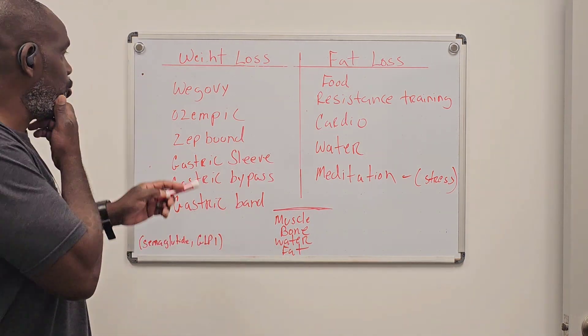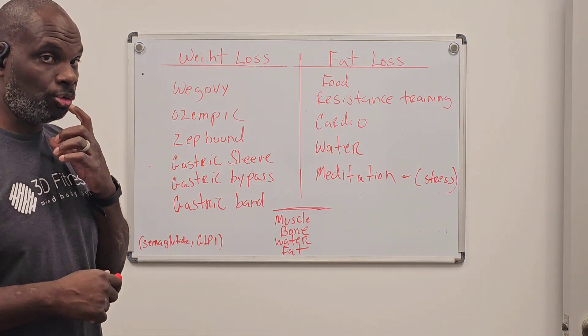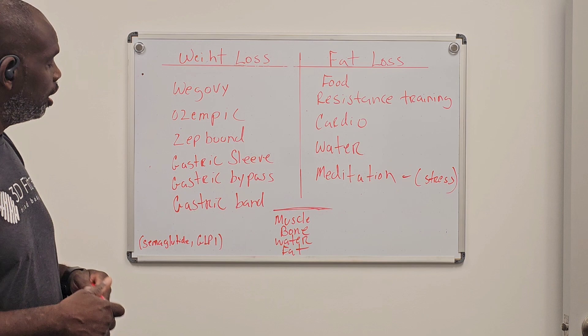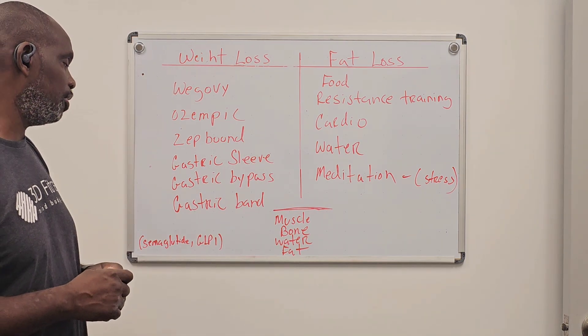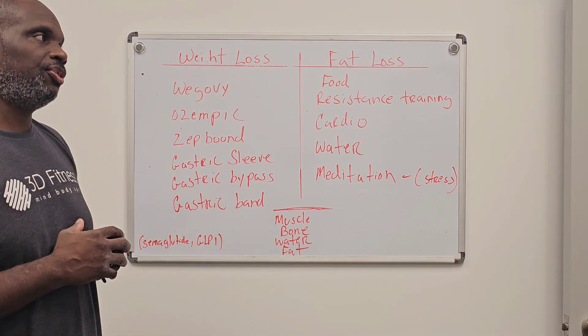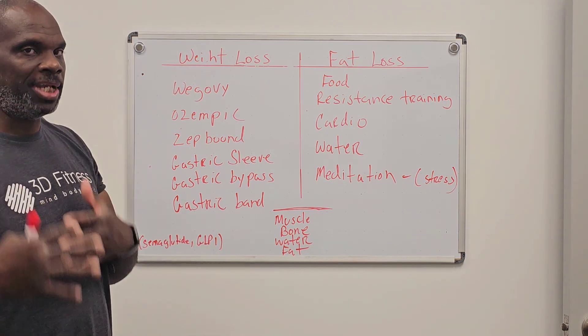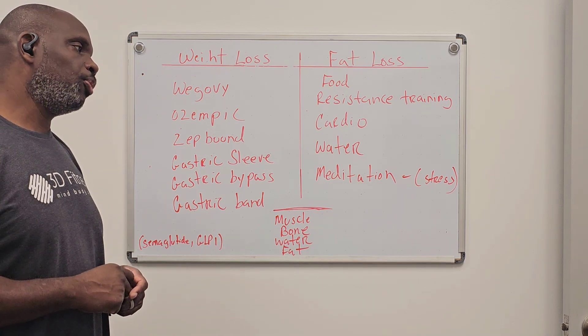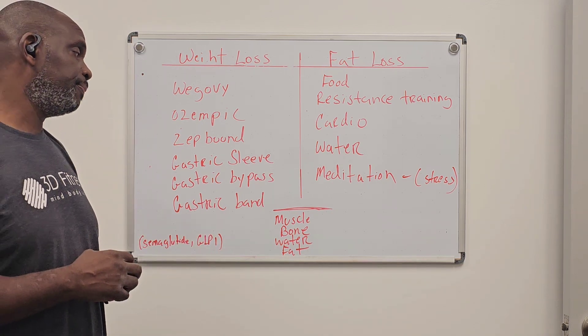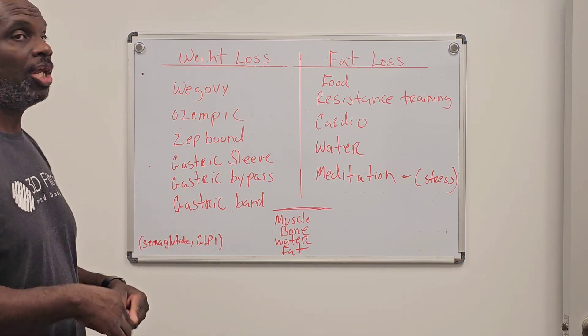So let's say you choose to go to a weight loss clinic and they inject these compounds in you and cause you to not be hungry and start to lose weight. For one, the active ingredients in these compounds is semaglutide, or some people might go with GLP-1. That pretty much helps your body metabolize carbohydrates a lot better in addition to making you not hungry.